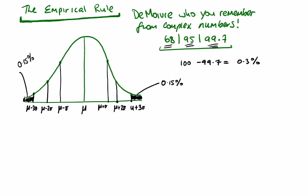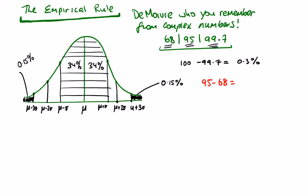So inside these lines here we have 68 percent of the normal distribution which would put 34 percent in there and 34 percent in there. Within the next two we have the difference between 68 percent and 95 percent, 95 minus 68 is 27 percent, so that would leave 13.5 percent in there and 13.5 percent in there.